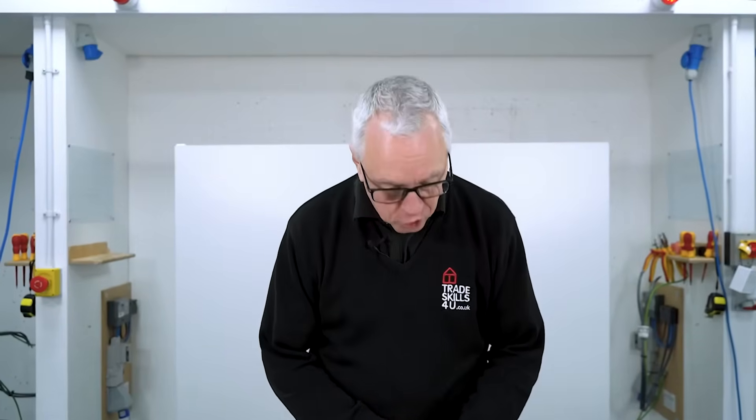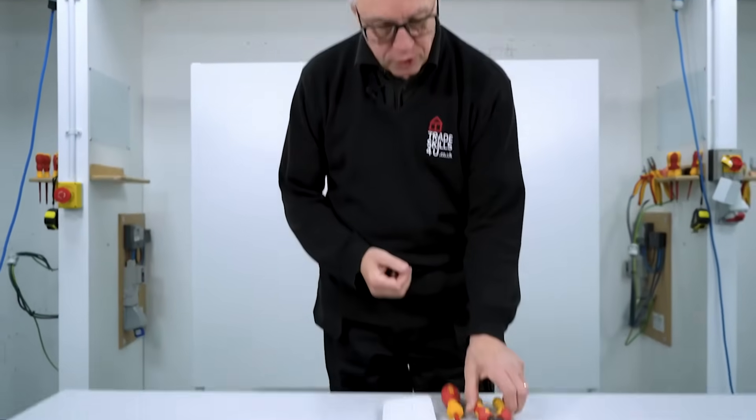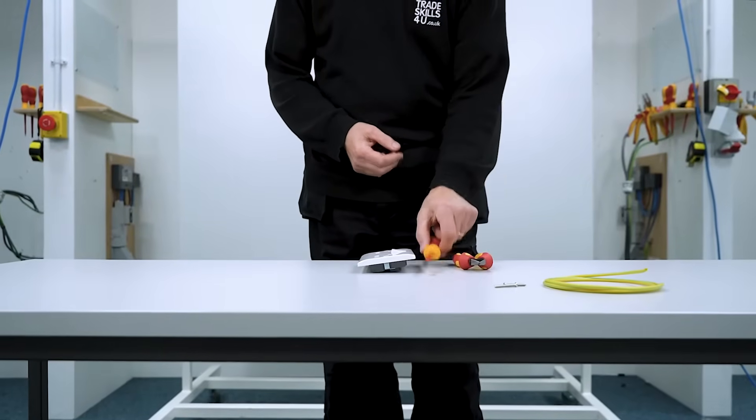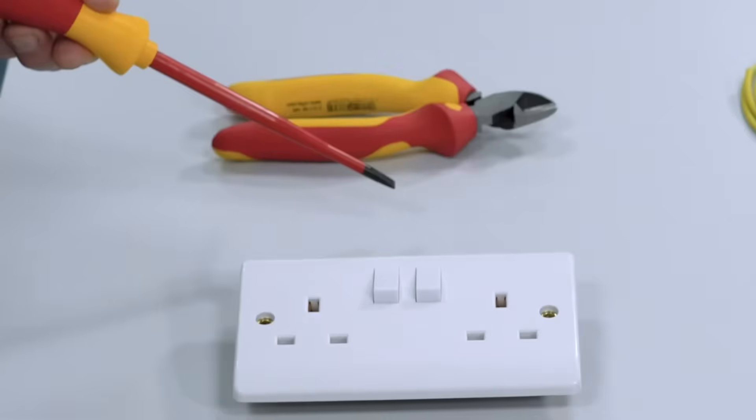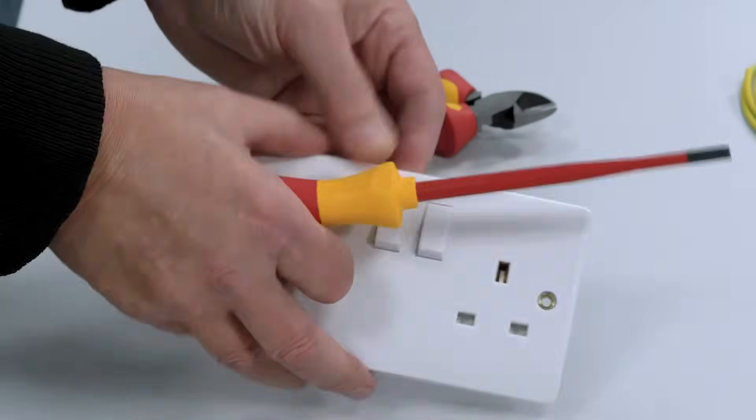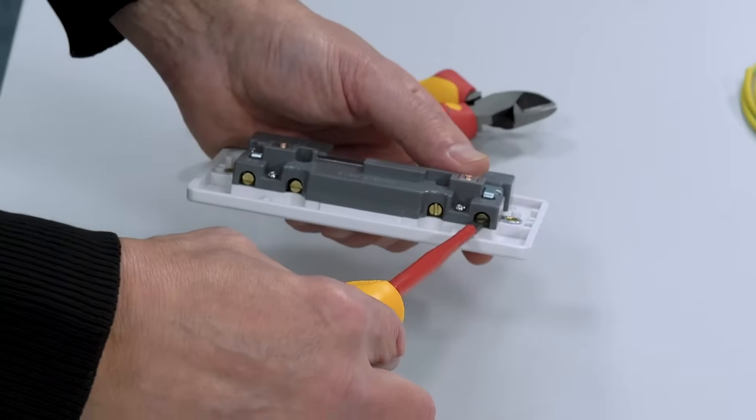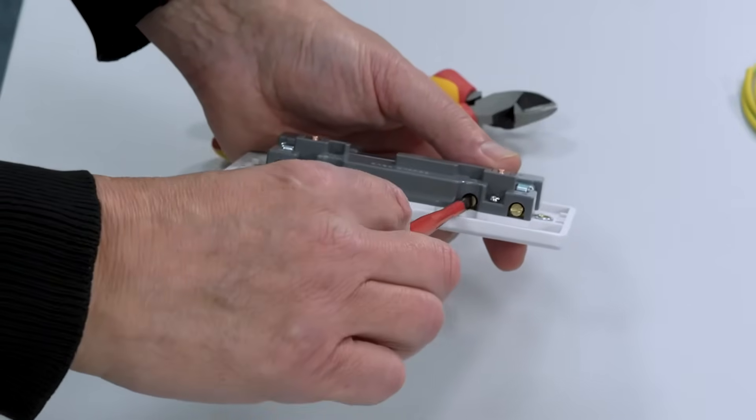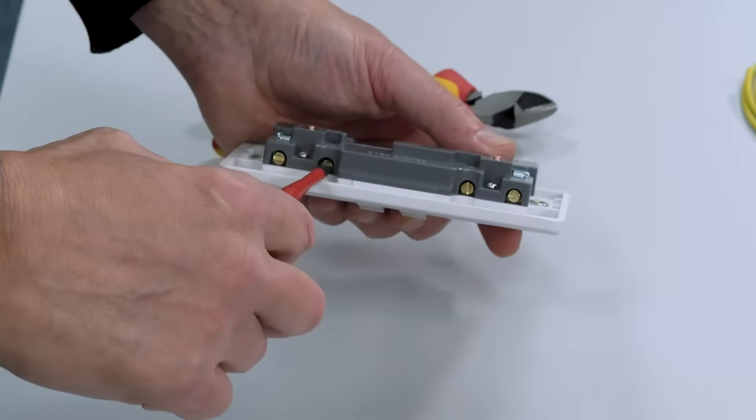The tools I'm going to need for this job are my wire cutters, known as side cutters, and a terminal screwdriver. Always make sure that your terminal screwdriver is the right size for the terminal screws. If it's too small, you can end up damaging the screws.